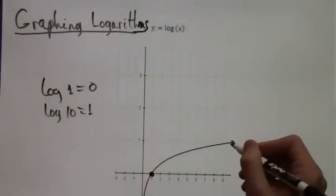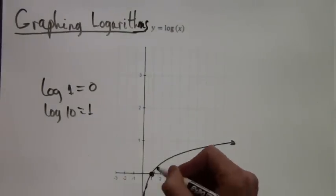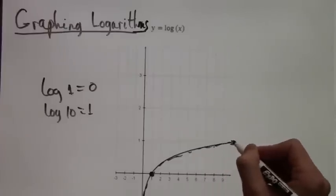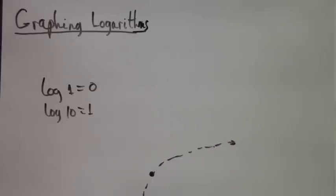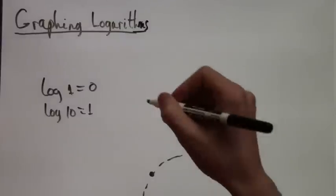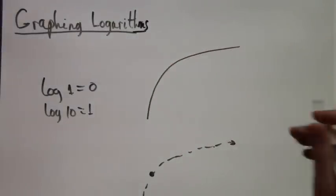Log of one is equal to zero, so it will intersect the point (1,0) and goes through that point, and then it slowly, slowly increases.